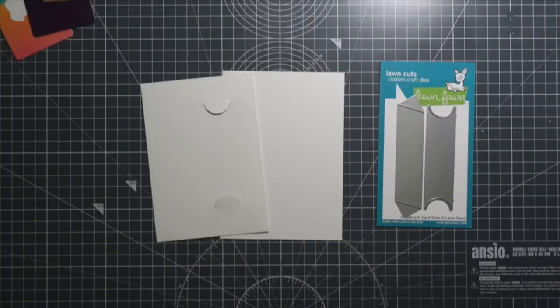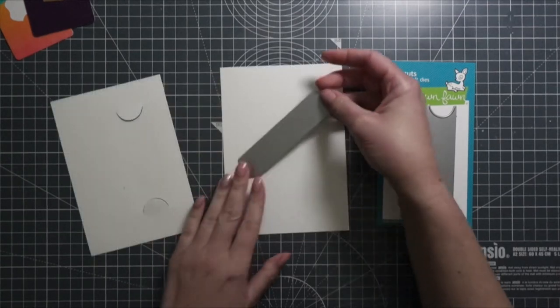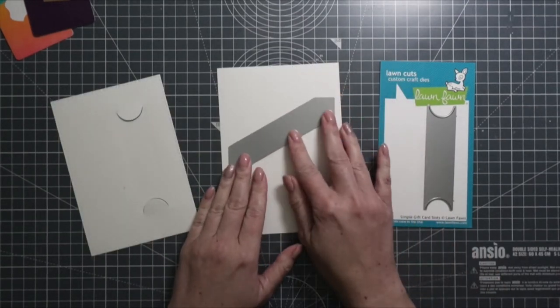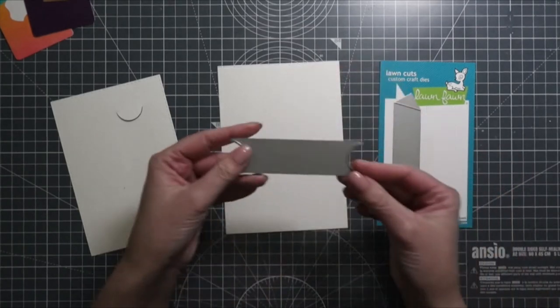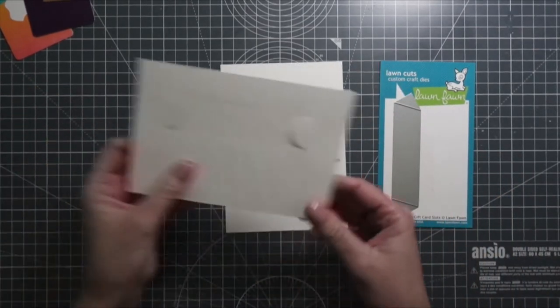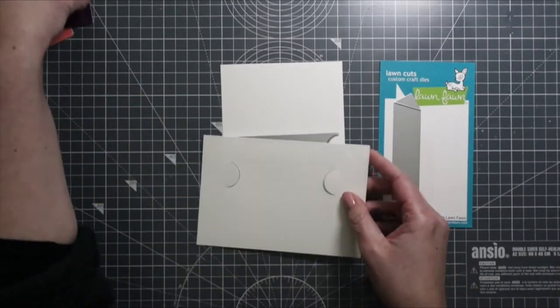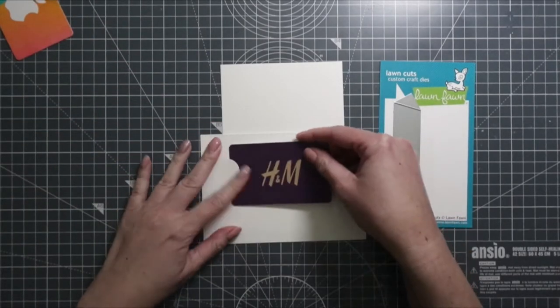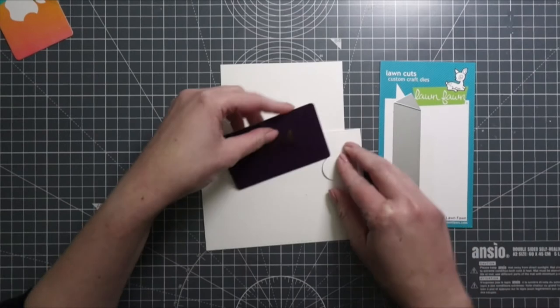The die I'm using is from Lawn Fawn, called Simple Gift Card Slots. There are two dies: one makes the slots diagonally, and the other creates slots on each side of the gift card. There are many dies for gift cards, but I wanted something super simple where I can add the gift card inside and outside of the card.